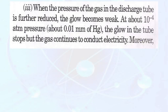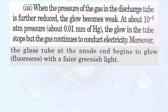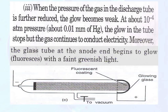Further, when the pressure of the gas in the discharge tube is further reduced, the glow becomes weak. At about 10 to the power minus 4 atmosphere pressure, the glow in the tube stopped but the gas continues to conduct electricity. Moreover, the glass tube at the end of the anode began to glow with a fluorescent color and with a faint greenish light. On performing the discharge tube experiment using a perforated anode, it was seen that the back of the anode was shining with a fluorescent color.